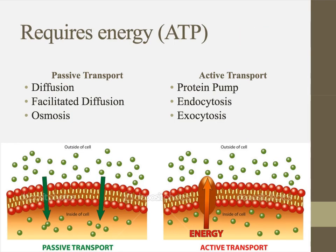It's also worth noting some examples of each type of transport. Passive transport includes diffusion (also called simple diffusion), facilitated diffusion, and osmosis. In terms of active transport, we have protein pumps, endocytosis, and exocytosis.